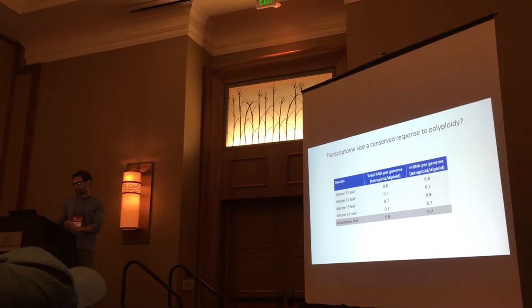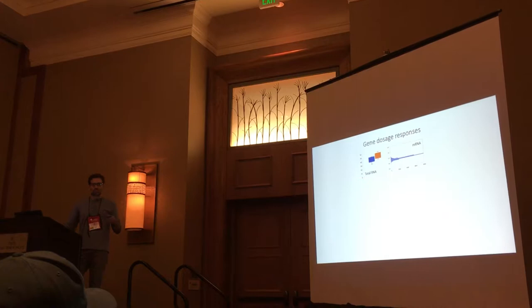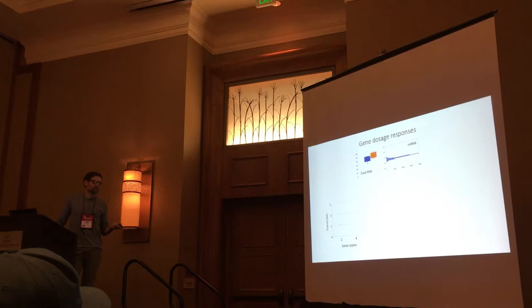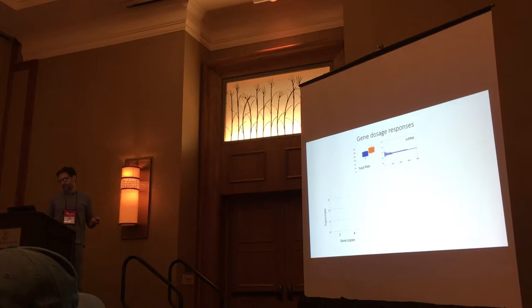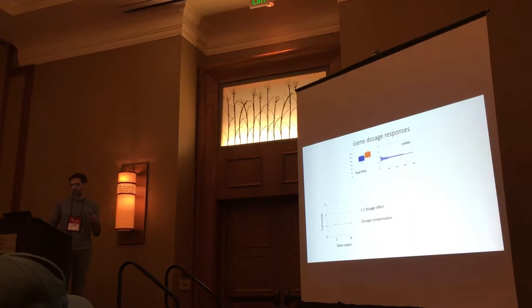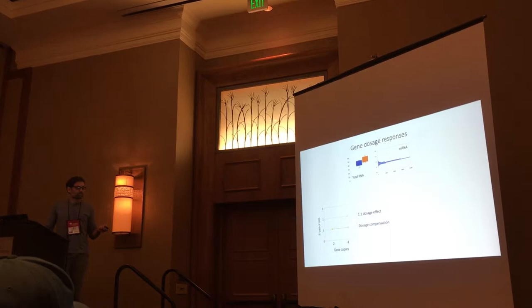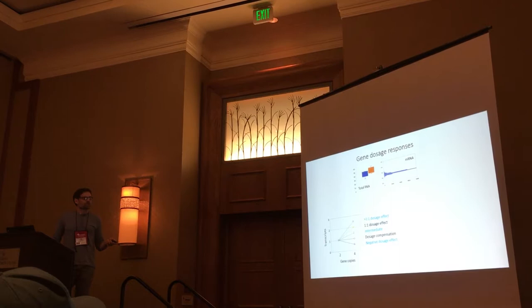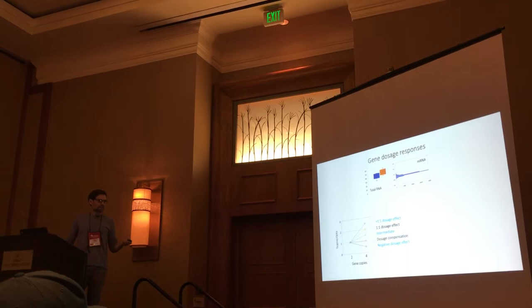I've been talking about global transcriptional responses — what about individual gene dosage responses? If a gene is present in two copies in a diploid and produces a certain amount of transcripts, and doubling the copy number to four causes a doubling in transcript abundance, this is a one-to-one dosage effect. If there are silencing mechanisms such that there is no change in transcriptional output with a doubling in gene copy number, this is dosage compensation. There are also other possibilities: greater than one-to-one dosage effect, partial compensation or intermediate responses, and negative dosage effect — where a doubling in gene copy number actually causes an absolute decrease in transcriptional output.